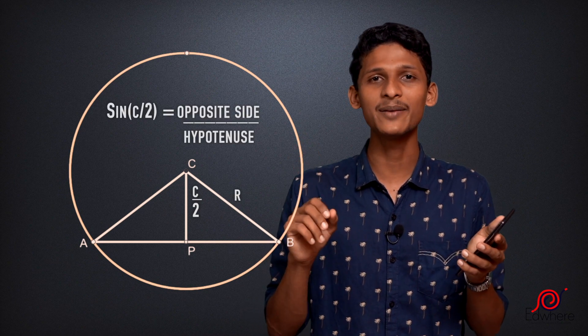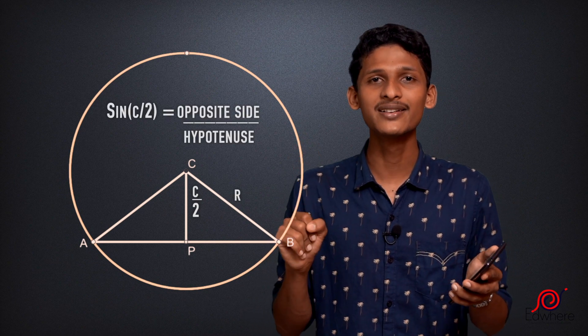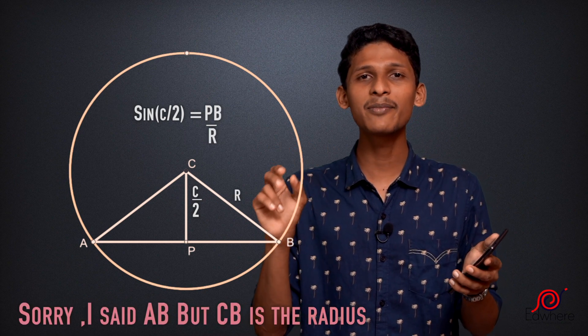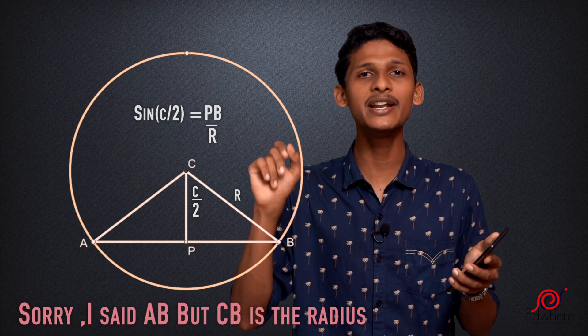What is the sine? The sine of C by 2 is PB divided by CB. The radius CB is R, so sine of C by 2 equals PB divided by R.